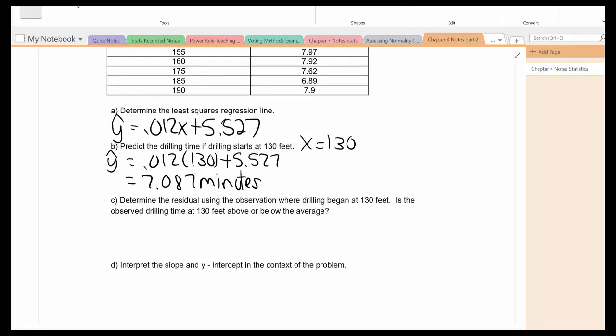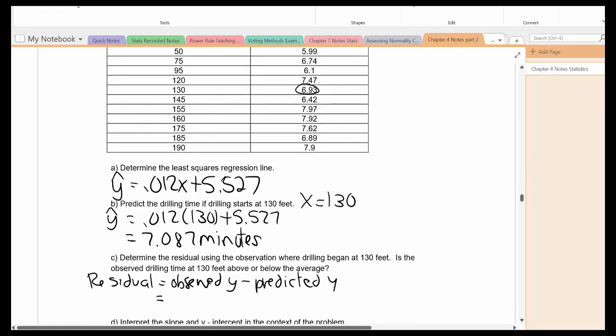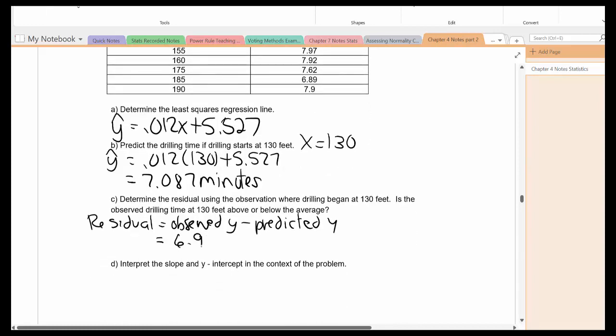Let's take a look at part c. Determine the residual using the observation where drilling began at 130 feet. Is this above or below the average? So we know the residual is equal to observed y minus predicted y. Well, the observed for 130 feet, that's going to be 6.93. Predicted, we just did, that's 7.087. Subtract, we get this. Don't forget your unit of measurement, which in this case is minutes. So this is going to be below the average, since the residual is negative.